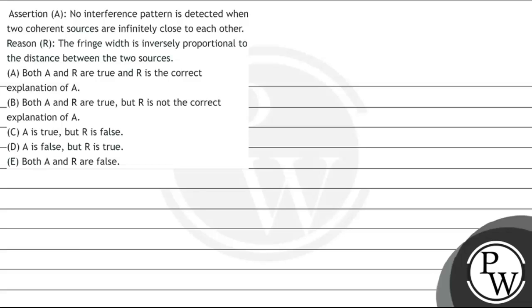Let's read this question. The assertion states: no interference pattern is detected when two coherent sources are infinitely close to each other. The reason given is: the fringe width is inversely proportional to the distance between the two sources.